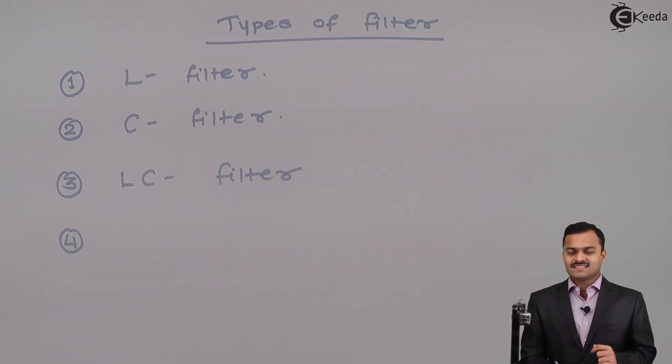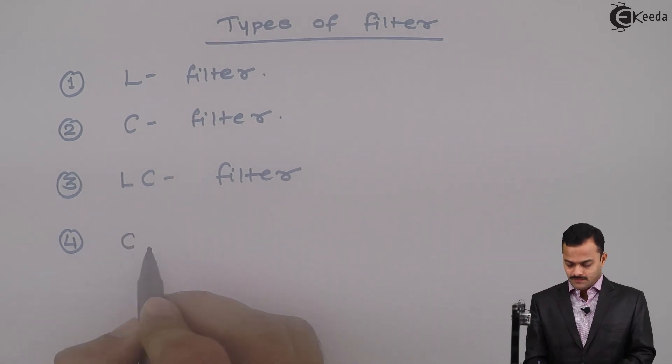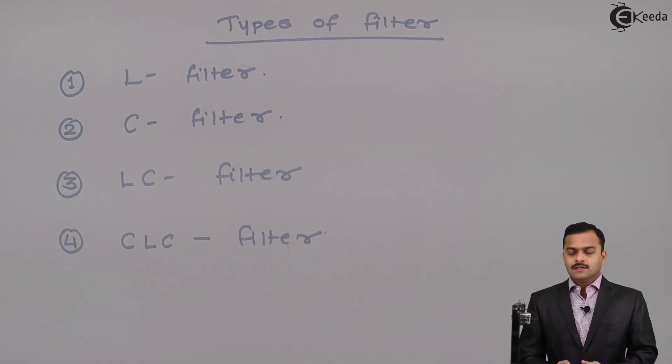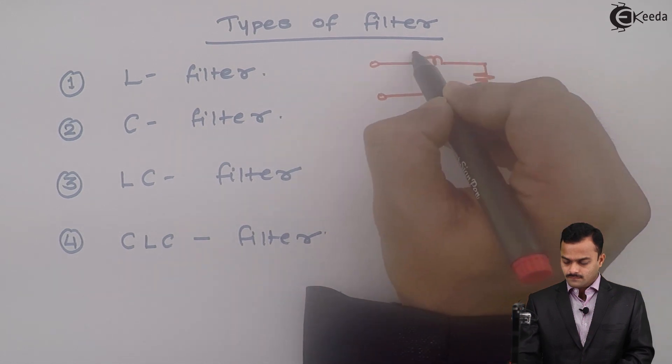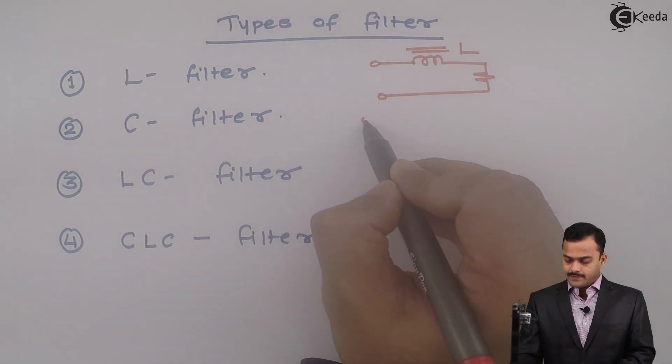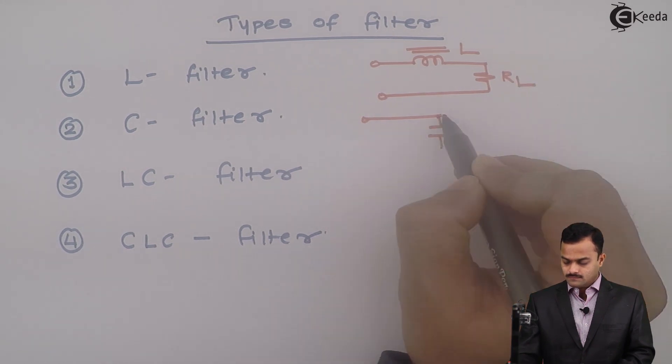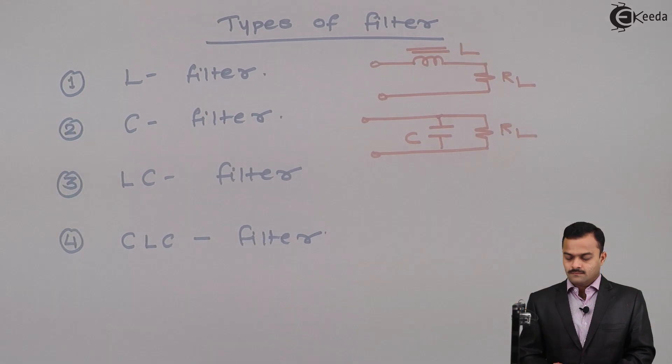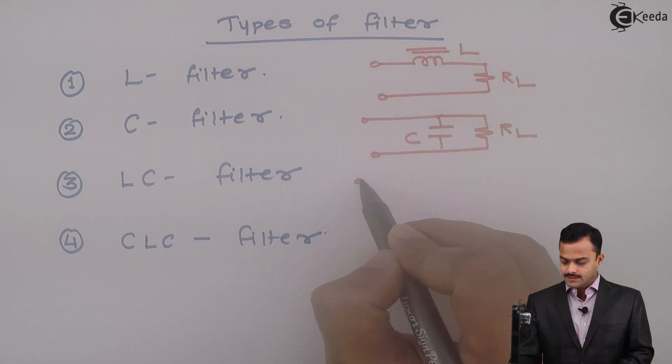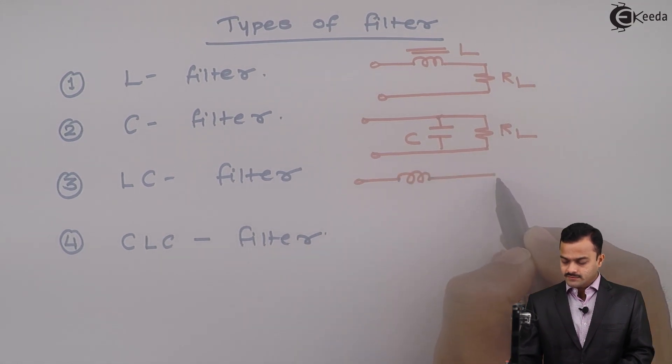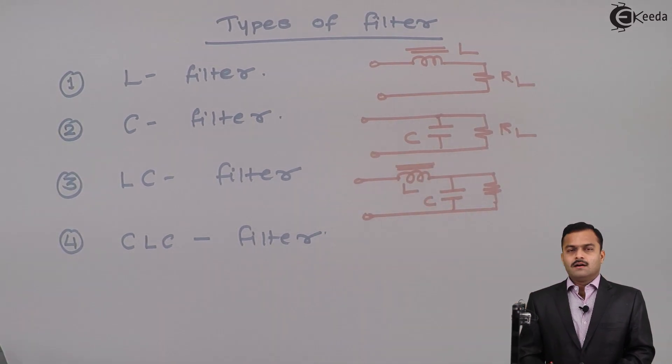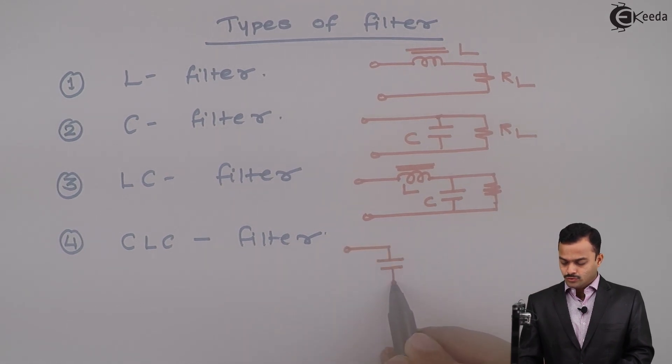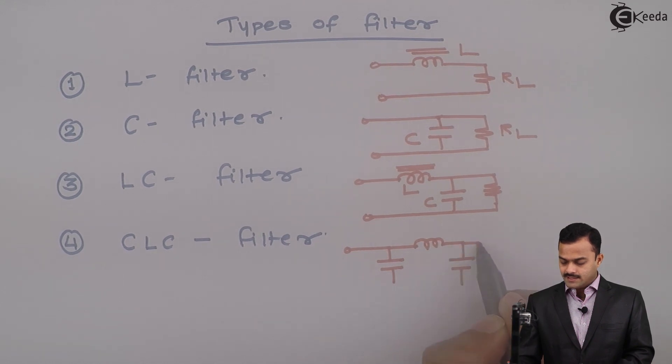To have best improvement in the output voltage that is perfect pure DC, we can have CLC filter. Let's draw circuit for this. L filter is simply an inductor in series with a load. C filter, we have a capacitor across the load. LC, obviously a combination of L and C. Inductor in series with a load but capacitor across load. And CLC will be like this. You will have two capacitors and an inductor in CLC filter.